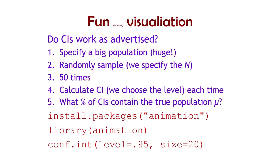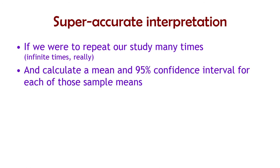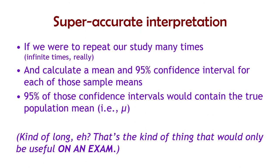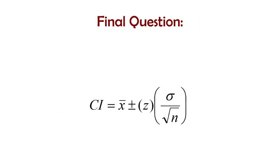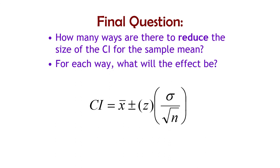So this is the super accurate interpretation of what a confidence interval means: if we were to repeat our study many, many times and calculate a mean and a 95% — or whatever percent — confidence interval for each of those sample means, then 95% of those confidence intervals would contain the true population mean. That's our interpretation. If we want to include our actual values, we use the fudgy subjective one: we are 95% confident that the true population mean lies between this and this. As a final question to think about: how many ways are there to reduce the size of a confidence interval? What can you change about your research, your calculations, or your decisions to make it smaller? For each way, will it increase or decrease the size? There are at least three ways — it could come up on an exam someday.